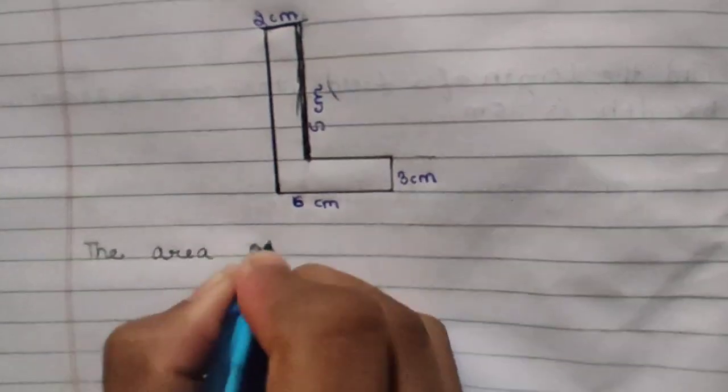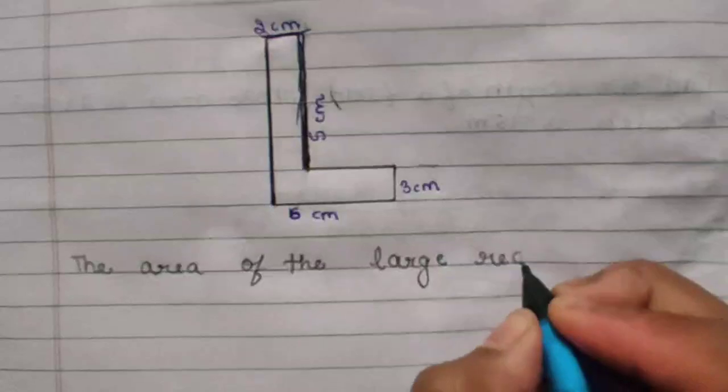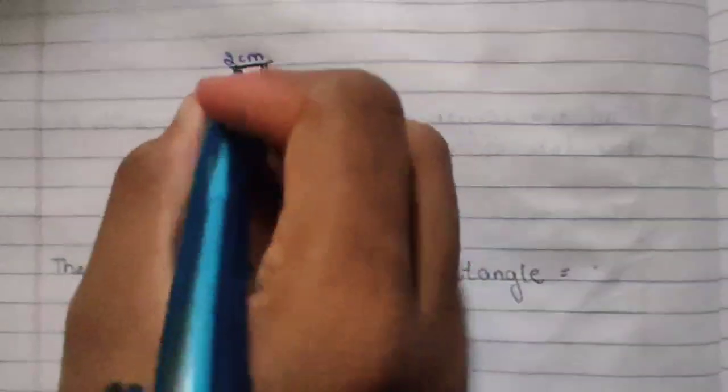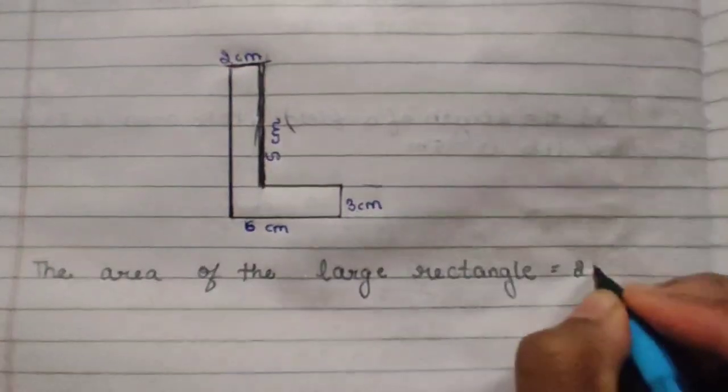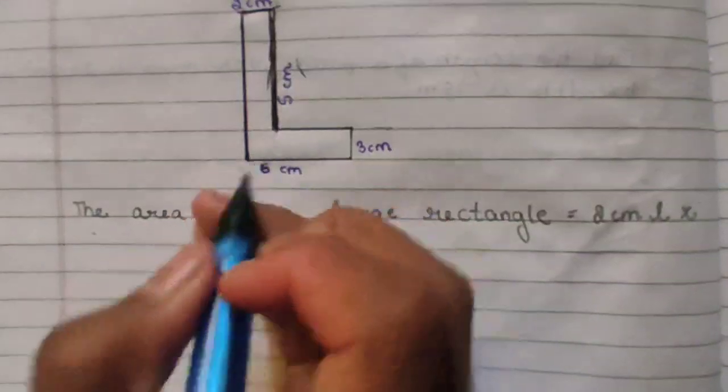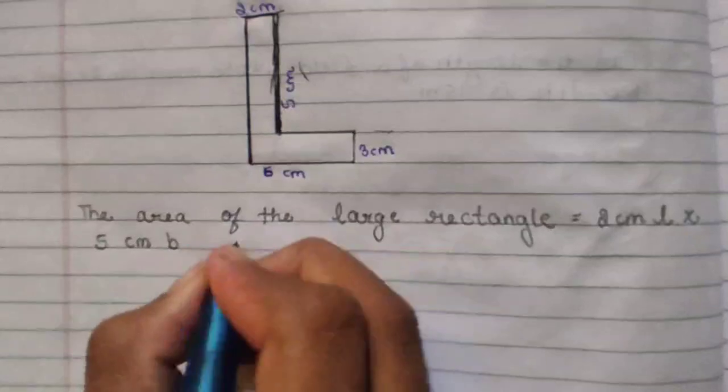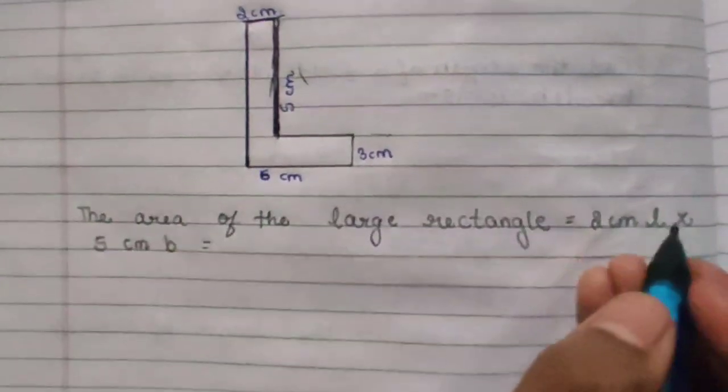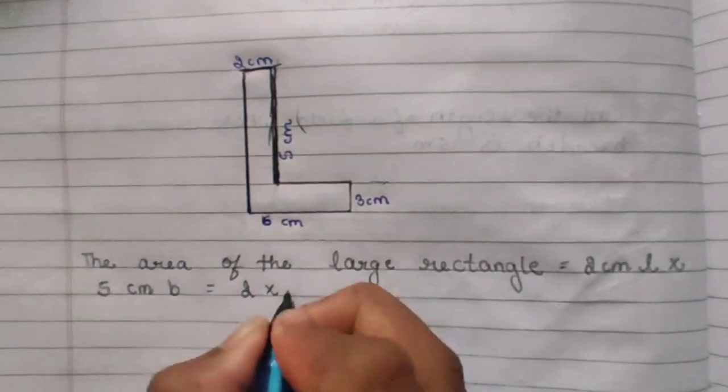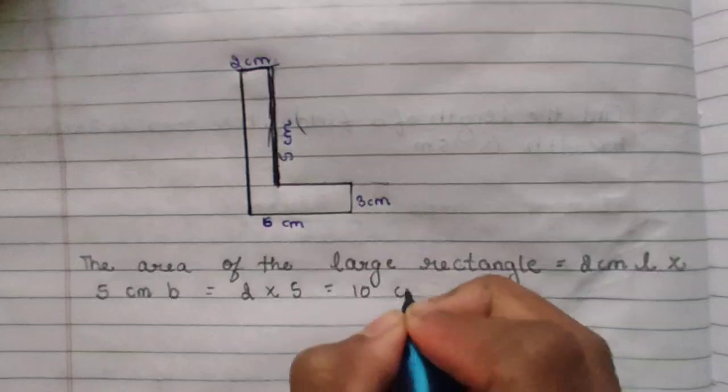The area of the large rectangle equals 2 cm length multiply 5 cm breadth. Now we have to multiply these two length and breadth: 2 cm multiply 5 cm. We get the answer 10 square cm.